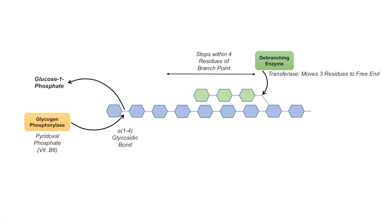The de-branching enzyme also has another function: it functions as a glucosidase to hydrolyze an alpha-1,6 bond at a branching point. As you remember, glycogen phosphorylase can only act on an alpha-1,4 glycosidic bond. So the de-branching enzyme takes care of the branch points on glycogen and hydrolyzes an alpha-1,6 bond. When it does hydrolyze an alpha-1,6 bond, the glucose released is actually released as free glucose, not a glucose-1-phosphate — that is one important point to remember.